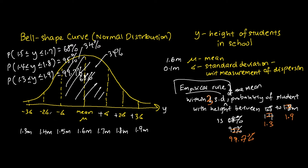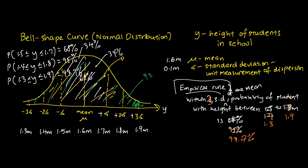Within two standard deviations of the mean — from here all the way to here — this whole chunk is actually 95 percent. And within three standard deviations of the mean — from here all the way to here on both sides — the probability is actually 99.7 percent.